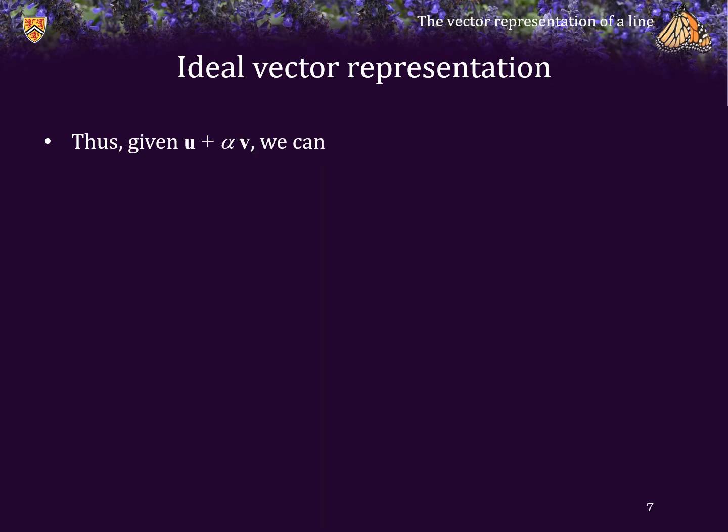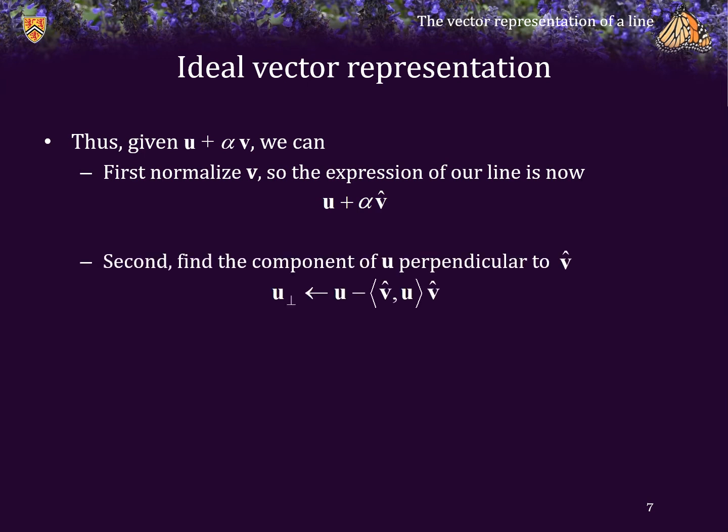Given an arbitrary representation of a line, we can first normalize v so that the expression of our line is now u + α times a normalized vector. Having done so, we can now find the component of u that is perpendicular to v̂, which is u minus the projection of u onto v̂. Because v̂ is now a normalized vector, that expression is simplified. Of course, because u is a point on the line, we do not normalize the vector u. We will represent this specific u as u_perp, meaning that it is the point on the line that is perpendicular to that line.